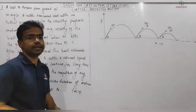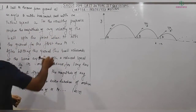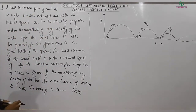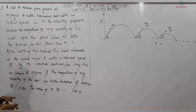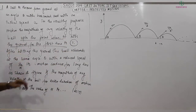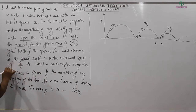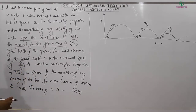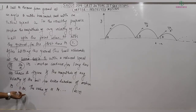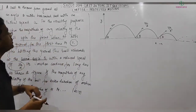This problem was asked in IIT Advanced 2019. A ball is thrown from the ground at an angle theta with the horizontal and with an initial speed of u₀. For the resulting motion, the magnitude of average velocity up to the point when it hits the ground for the first time is v₁.